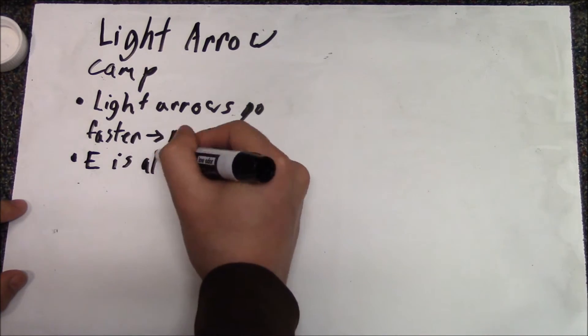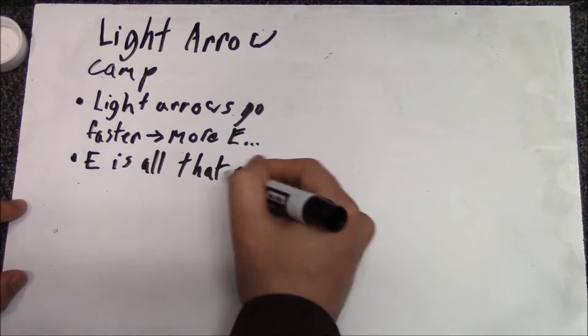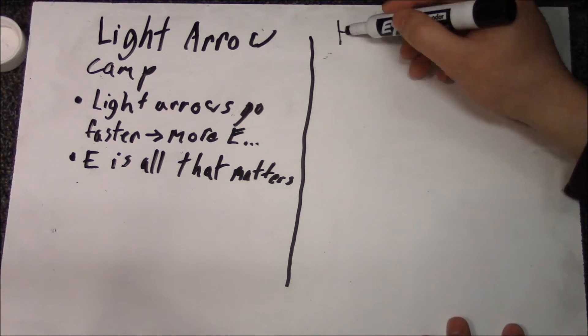They also claimed that energy was all that mattered. Thus, they concluded that light arrows were better, or at the very least, as good as heavy ones.